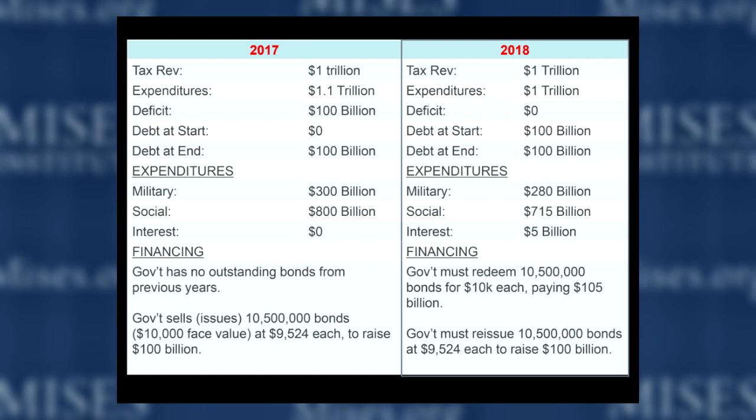Expenditures this time around: I had two hundred eighty billion for the military, seven hundred fifteen billion on social spending, and five billion for interest. Those three numbers add up to one trillion. Notice right away, part of the drag of carrying that one hundred billion dollar debt is that now five billion of their expenditures is just due to interest on the debt. Even though they're taxing the same amount, they only have nine hundred ninety-five billion left over to work with, because one hundred billion times five percent equals five billion.